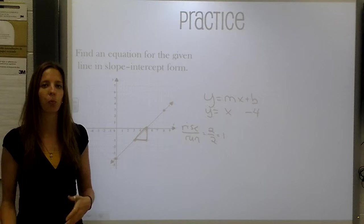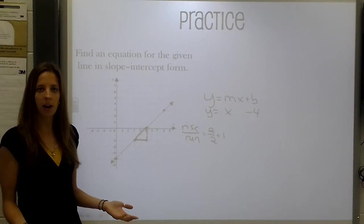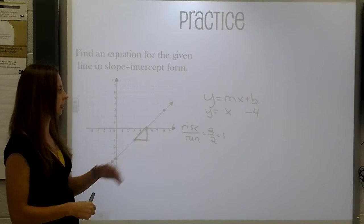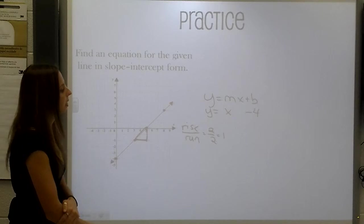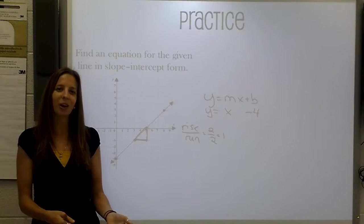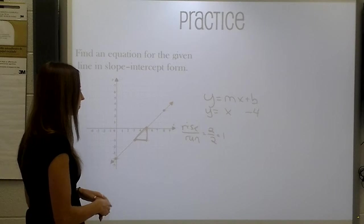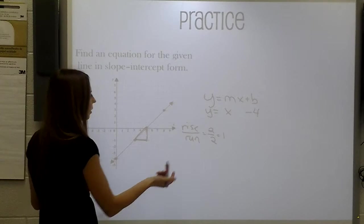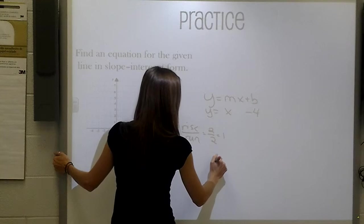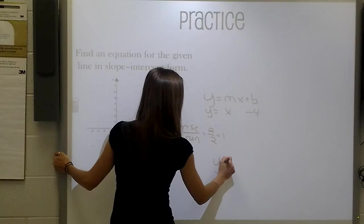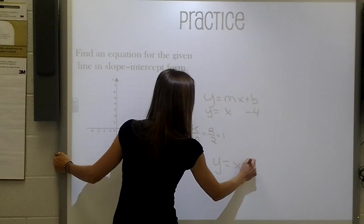So now we have y equals x minus 4. We don't need to write the 1 in front of the x. It's just a given if it's not there that we know that the slope then is 1. If you'd like to, it's not wrong to put that 1 in front and some people do choose to do that. So at this point, we know that our equation of a line is equal to x minus 4.